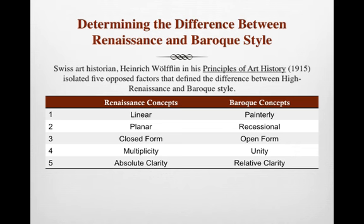In 1915, Swiss art historian Heinrich Wölfflin published Principles of Art History. In his book, he isolated five opposed factors or concepts that defined the difference between High Renaissance and Baroque style. They are: Linear vs. Painterly, Planar vs. Recessional, Closed vs. Open Form, Multiplicity vs. Unity, and Absolute vs. Relative Clarity.